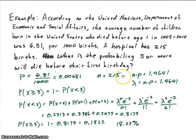Now, since we're dealing with this particular hospital, the number of children born there is 215. So we have the situation where P is real small, N is large, and if we multiply N times P, we get approximately 1.4641. And so that's on the order of 1. And so we'll set Lambda equal to that N times P, which is equal to 1.4641.